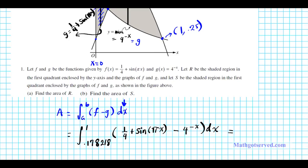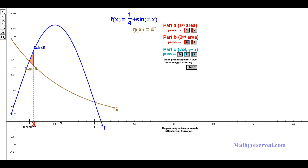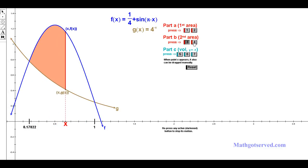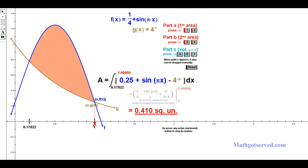For region S, we're slicing perpendicular to the X axis and summing the infinitely narrow rectangles going from 0.178218 to 1. The function on top is the trig function and the function on the bottom is the exponential. Setting up: integral from 0.178218 to 1 of [(1/4 + sin(πx)) − 4^(−x)] dx. Plug this into your calculator and you get 0.41 square units for the area of region S.